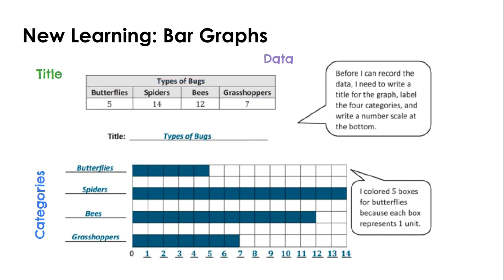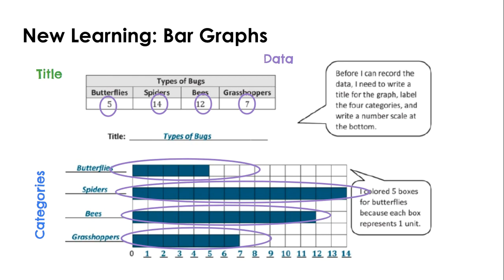Speaking of data, that is our next point. So the data in the table are those numbers 5, 14, 12, and 7. You'll notice that the data in the bar graph looks a little bit different. So the data is what I've circled here in purple. 1, 2, 3, 4, 5, 5 butterflies.